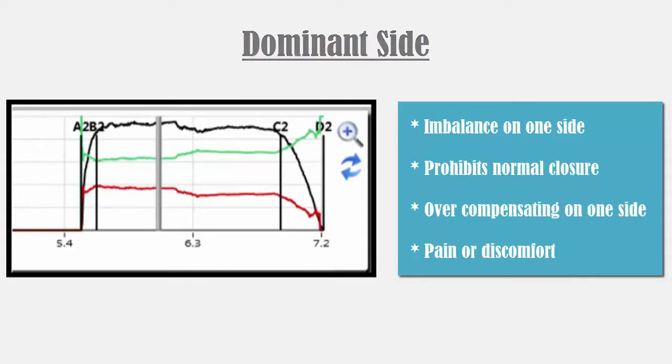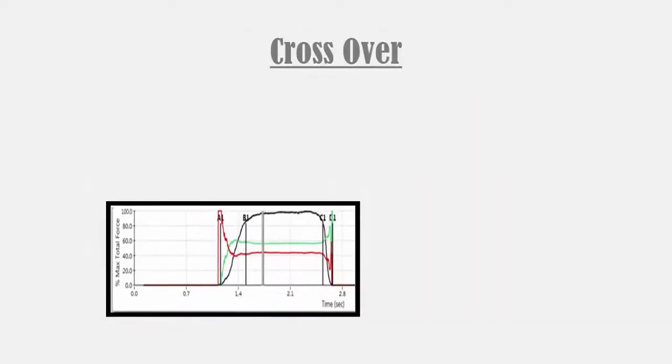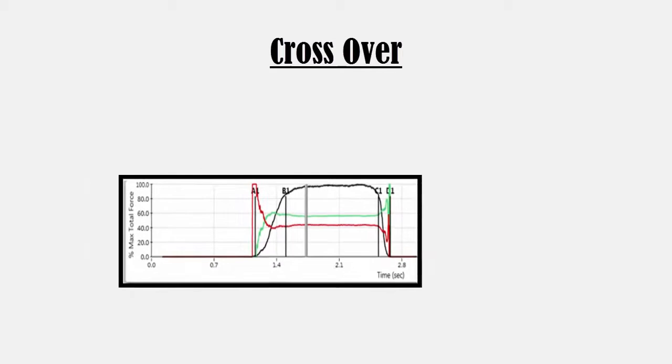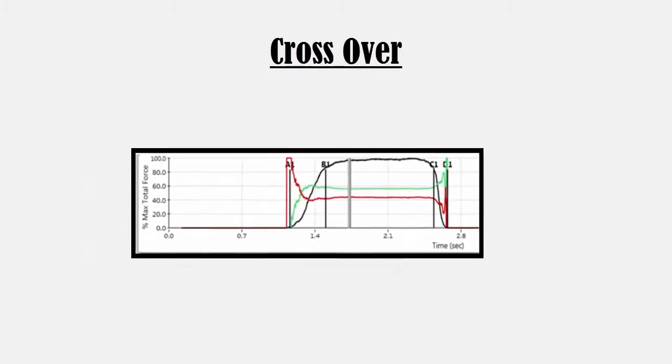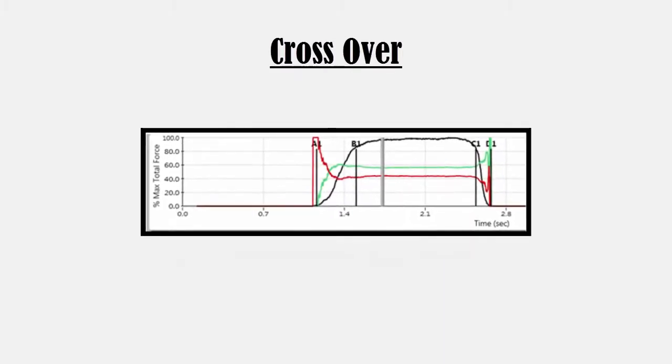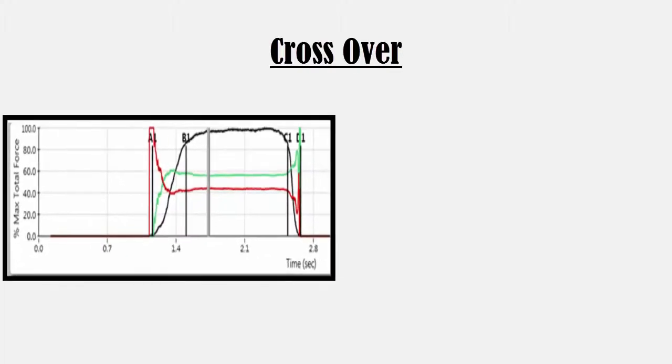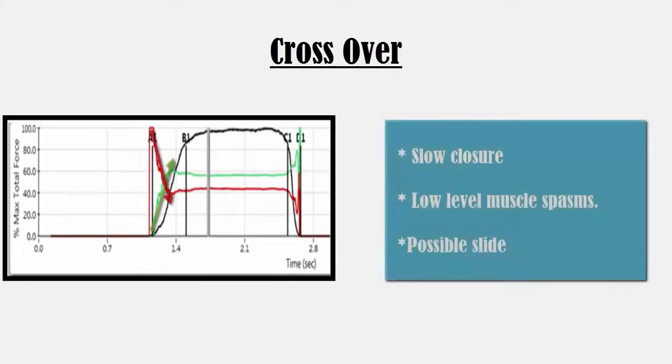The third example shows the red line starting at 100%, but the red line is overtaken by the green line, indicating that the left side becomes more forceful than the right. This force pattern may indicate a slide from the dominant side to the less dominant side.